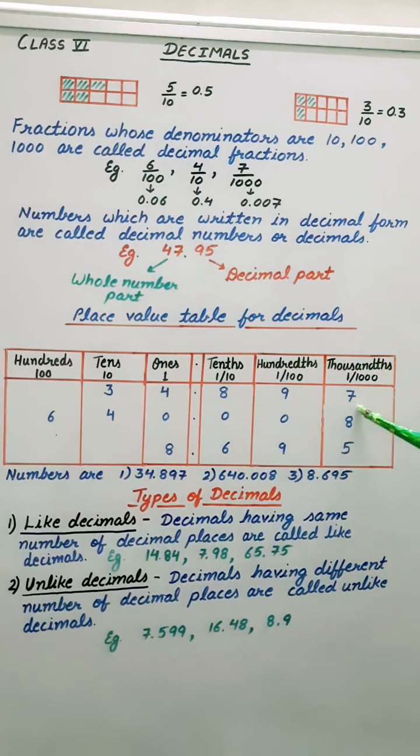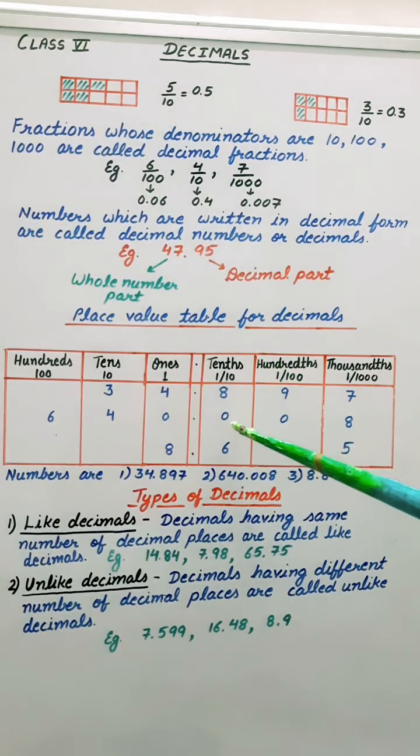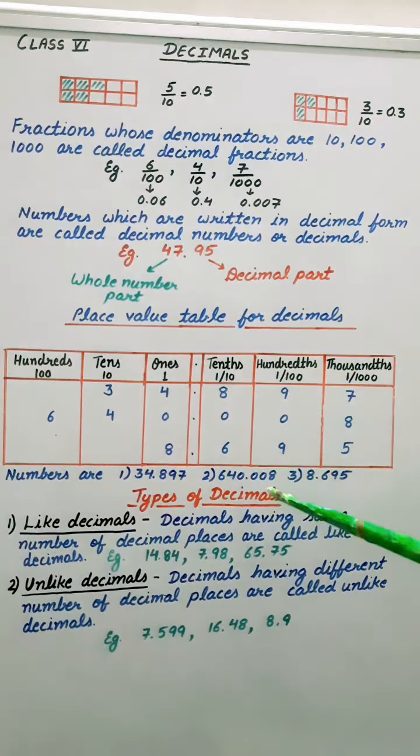Similarly, this one 640 we have written before this decimal. And after decimal 0, 10th place, 0 hundreds place, 8 thousands place. So like this only we have to write these numbers in place value table.